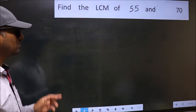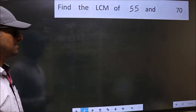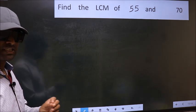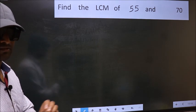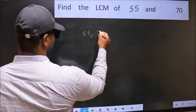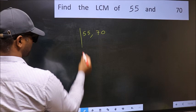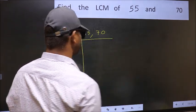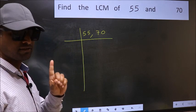Find the LCM of 55 and 70. To find the LCM, we should frame it in this way: 55, 70. This is your step 1.